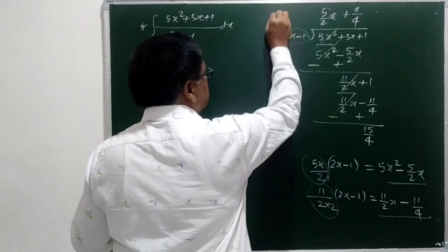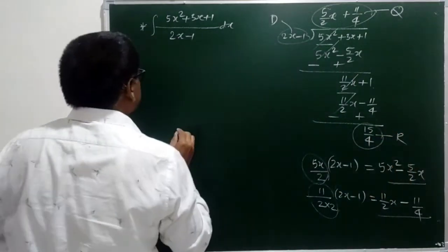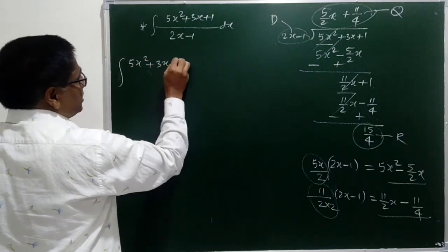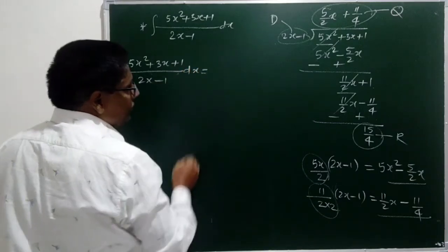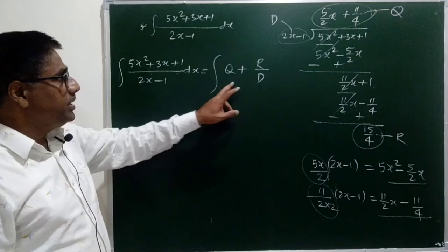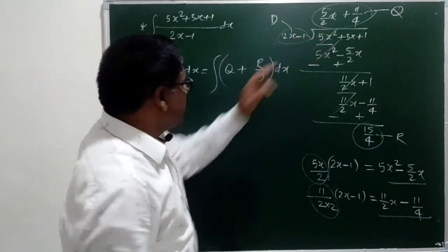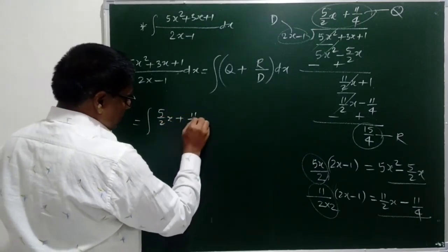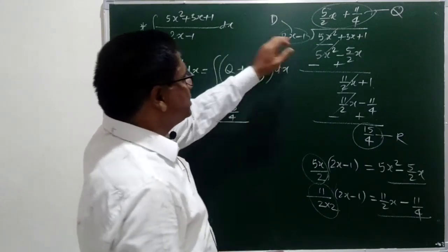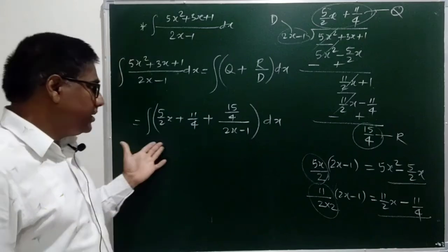Now here, 2x minus 1 is the divisor. This is the quotient and this is the remainder. This rational function can be written as 5x squared plus 3x plus 1 upon 2x minus 1 equal to q plus r by d. The quotient is 5 by 2x plus 11 by 4, the remainder is 15 by 4, and the divisor is 2x minus 1. In this way the function is simplified and we can easily find the integral of this.